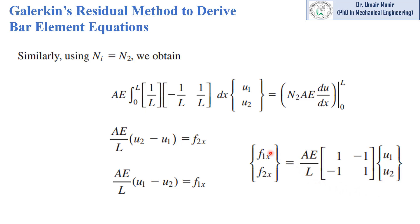In this matrix equation, the left side is the force matrix, the center part is the stiffness matrix, and the right part is the displacement matrix. This is the same equation we already derived in our previous lecture using the potential energy method and direct stiffness method.